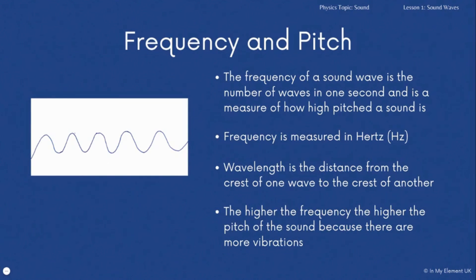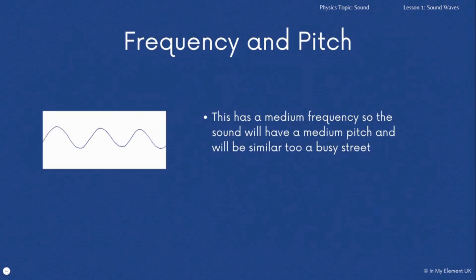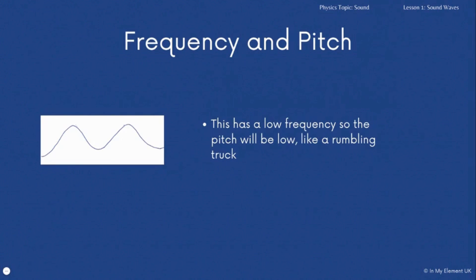This image here of wavelength of waves has a medium frequency, so the sound will have a medium pitch, and we're going to liken that to a busy street that you'd be out walking in, nothing too high, nothing too low. And then the last one here, much less frequent, has a lower frequency, so the pitch will be low. So that is more like a rumbling truck, much lower, much duller.